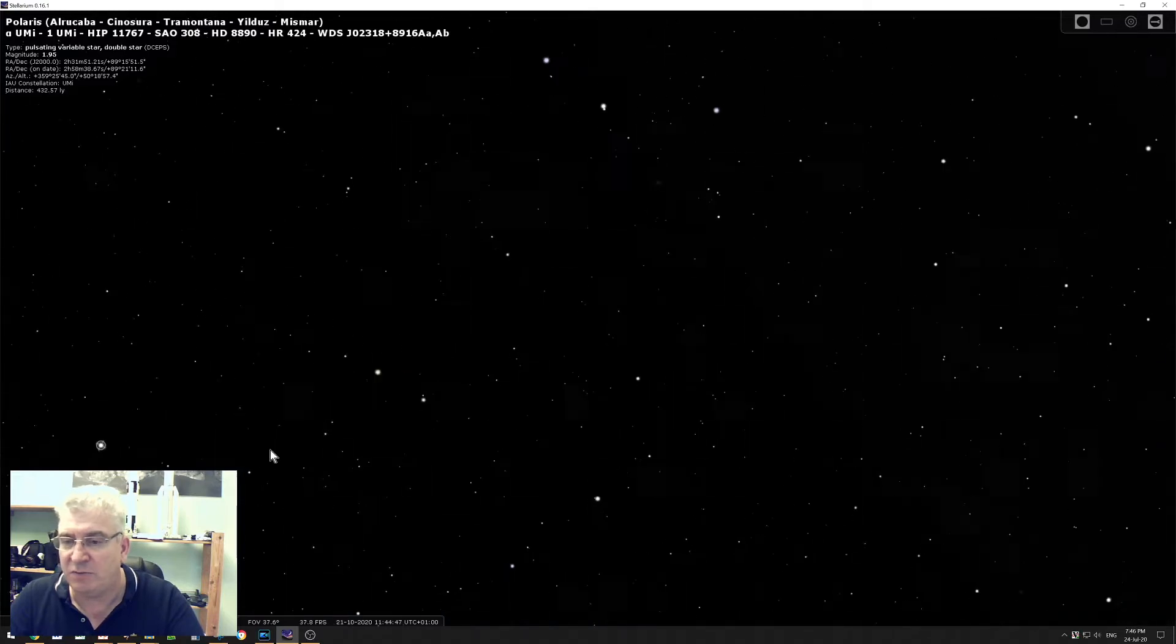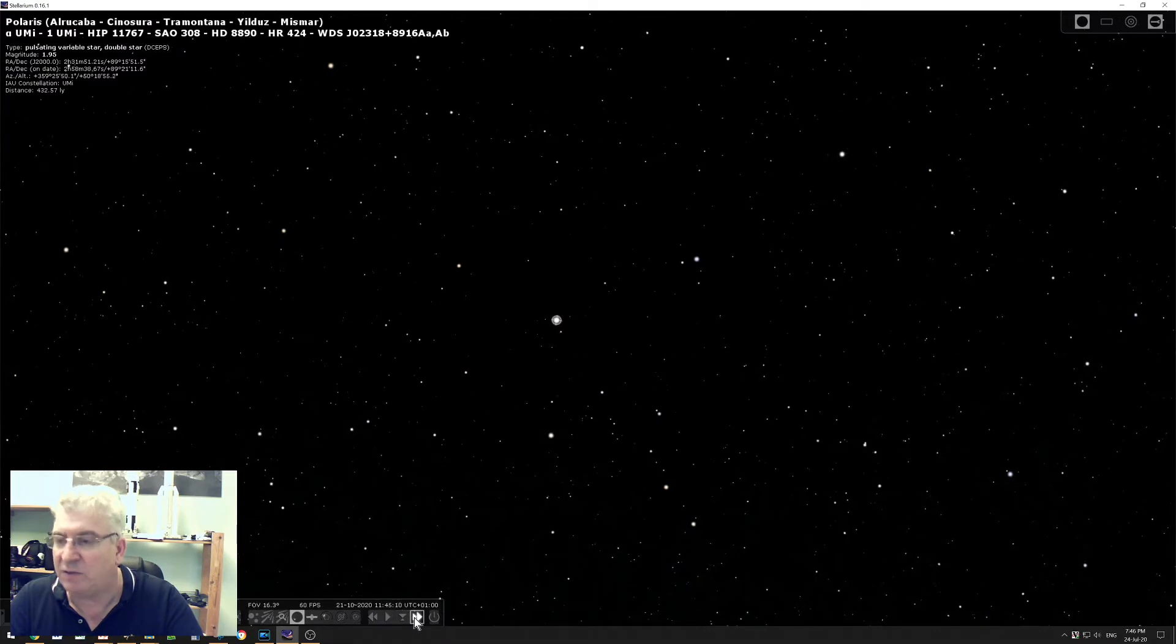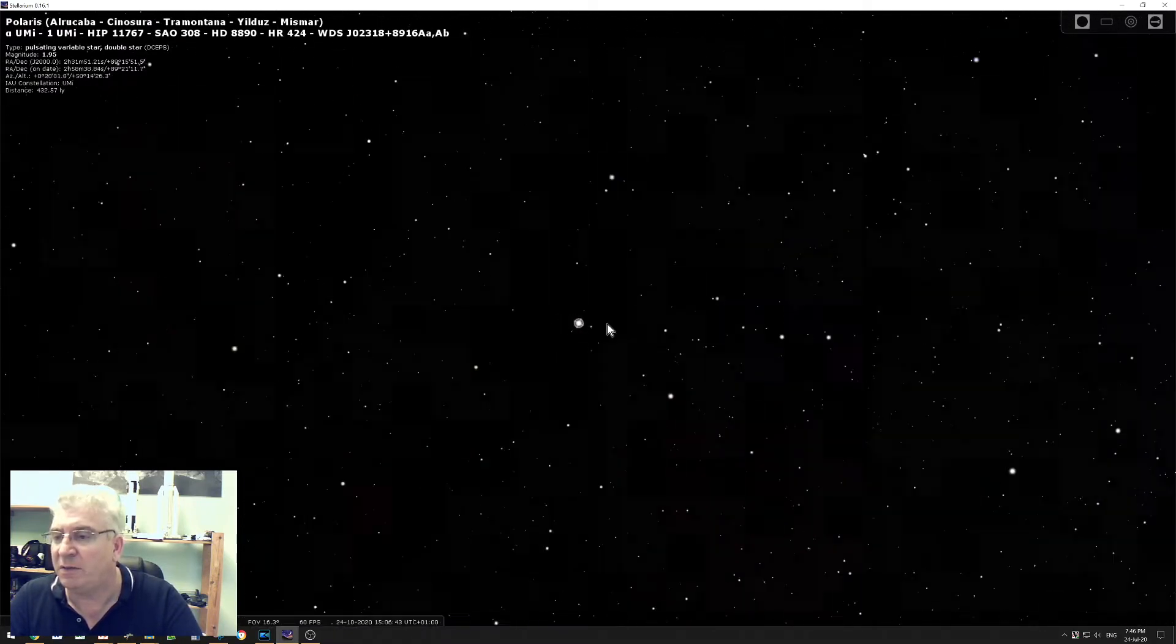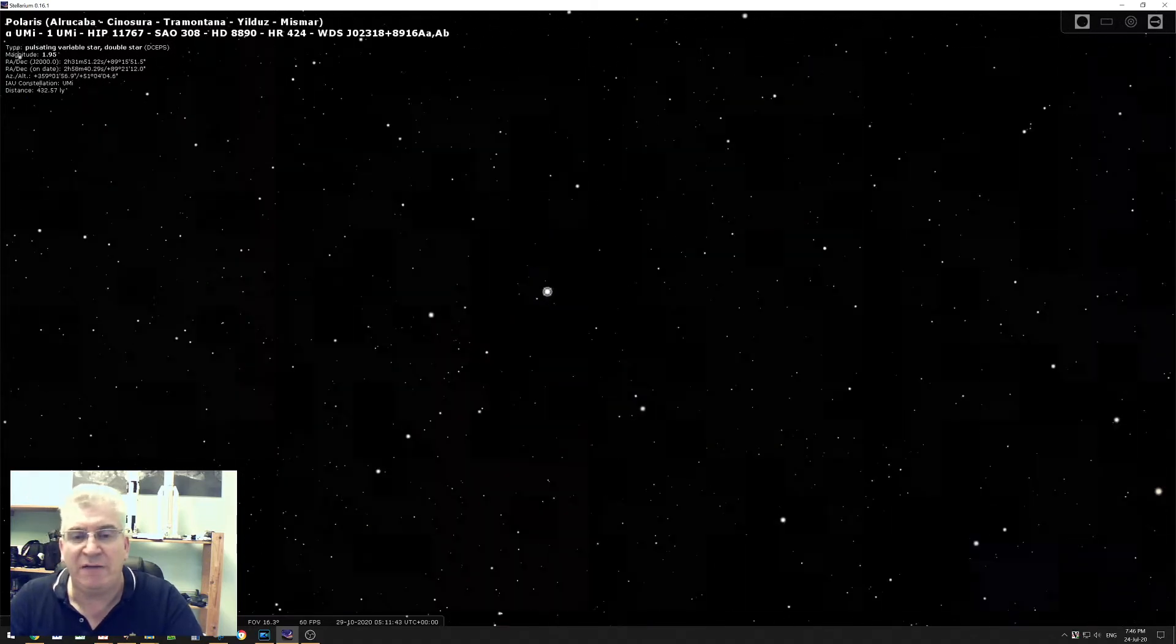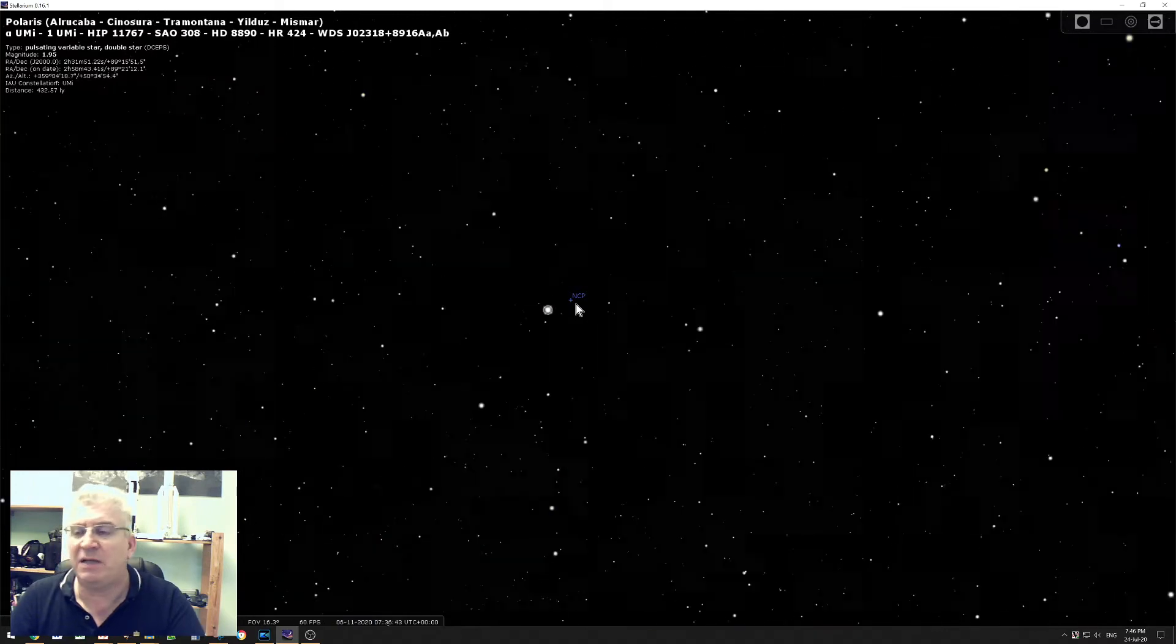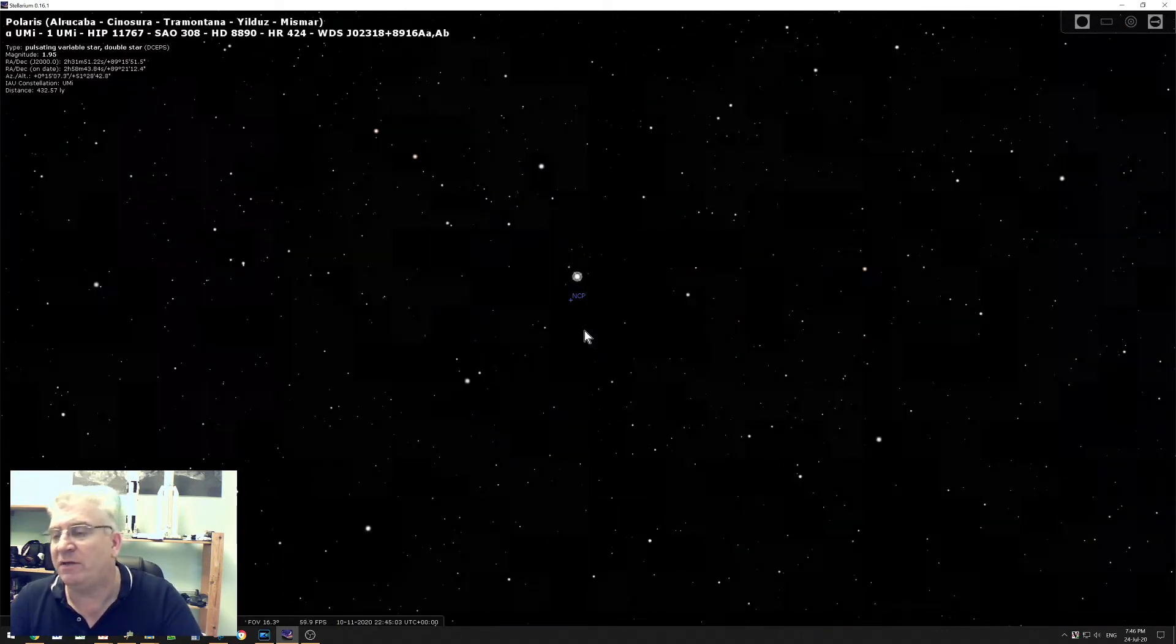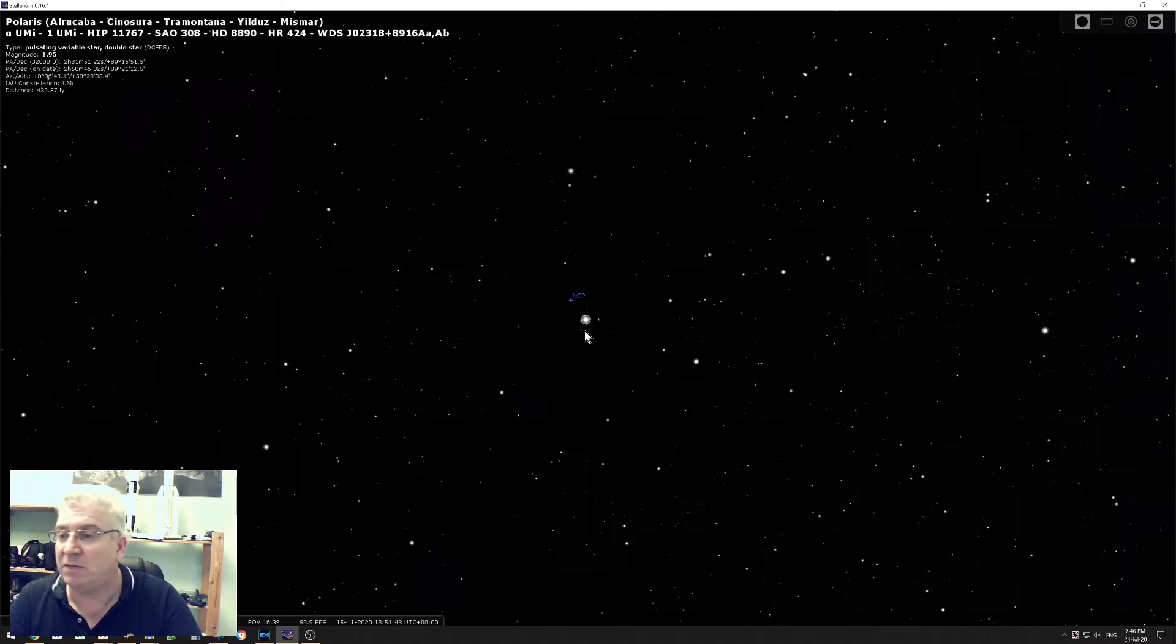If I zoom in a lot closer on Polaris and then once again accelerate time, you can see that Polaris is actually going round in a circle about a certain point. If I switch on what's called the celestial poles, you can see it's drawn a point called NCP, that's North Celestial Pole. That is the point about which the whole sky appears to rotate in the Northern Hemisphere.